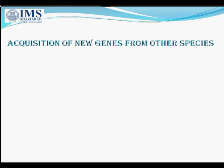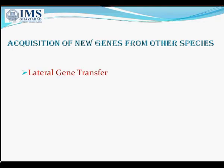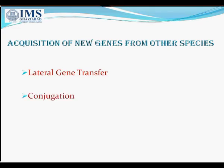Now, acquisition of genes from other species. There are three main ways in which new genes can be acquired from other species. Number one is lateral gene transfer — that is, the transfer of genes from one species to another. Comparisons of bacterial and archaeal genome sequences suggest that lateral gene transfer has been a major event in the evolution of prokaryotic genomes.